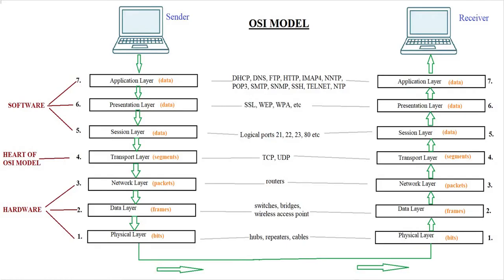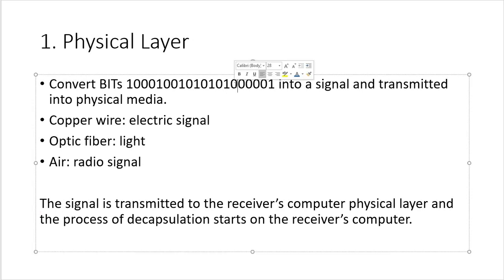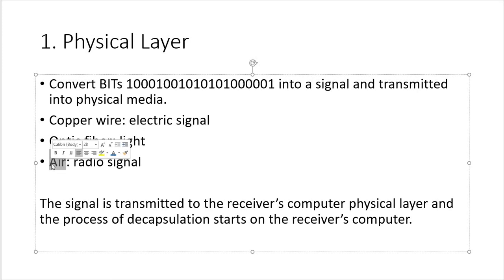The Physical layer converts those frames — the ones and zeros, the binary bits — into a signal that is transmitted over physical media. Physical media include copper wire for electrical signals, optic fiber for light signals, and air for radio signals. The signal is transmitted through these media all the way to the intended receiving computer.